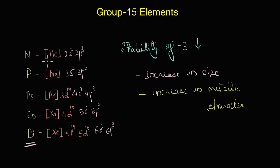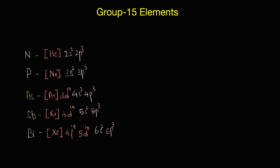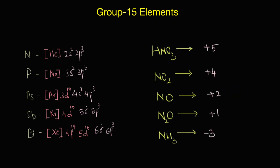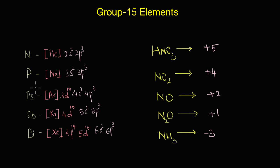Nitrogen is highly versatile, exhibiting a wide range of oxidation states — for example, +5 in nitric acid, +4 in NO₂, +2, +1, and −3. This is not the only thing that makes nitrogen special; compared to the rest of the group members, nitrogen enjoys much more attention. In the next video, we will look at some of the important anomalous properties of nitrogen.